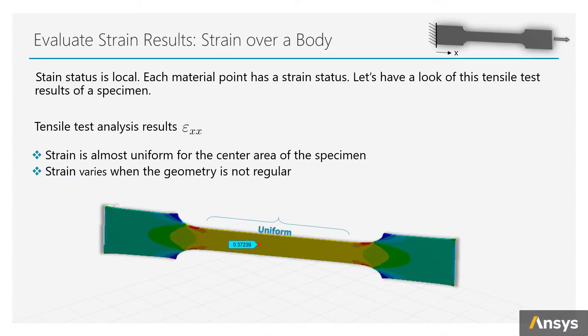However, for the area that geometry becomes not regular, the strain value has clear variation, which shows that strain is a local value.